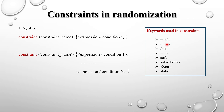There are several keywords used inside constraints: inside, unique, dist, with, soft, solve before, external, and static. We also have inheritance in constraints, bidirectional constraints, and functions in constraints. In the next session, I will explain all the keywords used in constraints. Thank you.